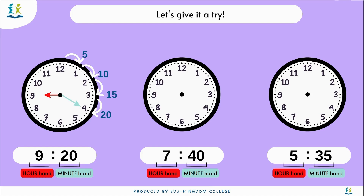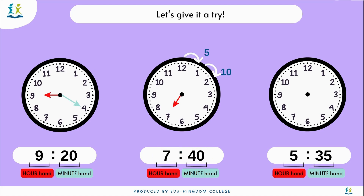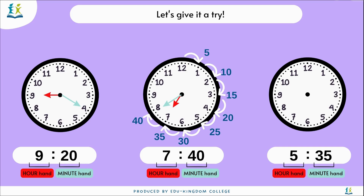For the clock in the middle here, we know the hour is 7, so the shorter hand will be pointing at 7. The minute is 40, so we need to count to 40: 5, 10, 15, 20, 25, 30, 35, 40. 40 is at 8, so the longer hand will be pointing at 8.